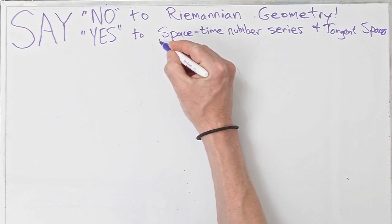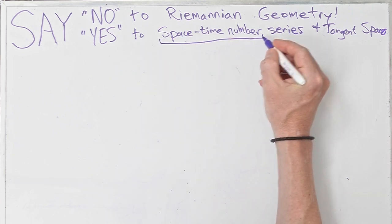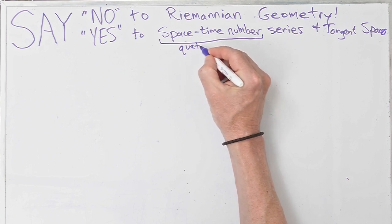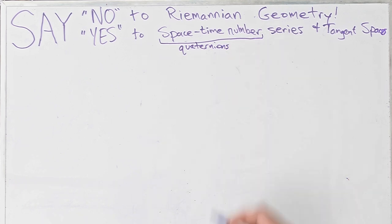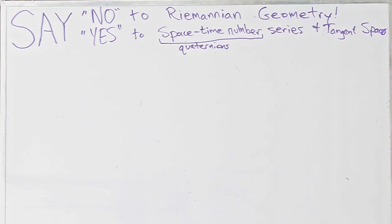These space-time numbers have a name for math people: quaternions. I actually own quaternions.com, but that name means 'for Roman soldiers,' which isn't really relevant. Space-time numbers suggests something to do with space-time. But why a series? Because one number is nowhere near enough. And why tangent spaces? Because we need to study change, and that can be done in tangent spaces.